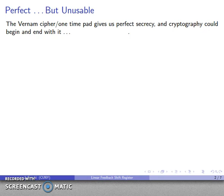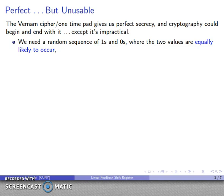Except it's impractical. The problem with the Vernam cipher is we need this completely random sequence of ones and zeros. And importantly, it's not just a random sequence of ones and zeros, but the two values have to be equally likely to occur.